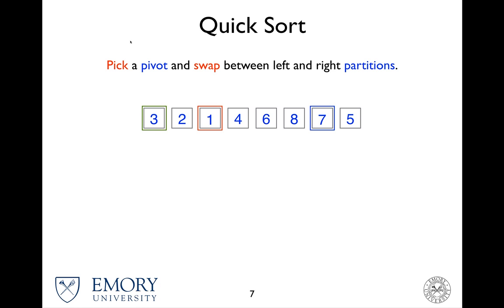You keep doing this again. The red box now tries to find something greater, and stops at four. The blue box tries to find some value that's actually smaller than three, which is the pivot, and has to go all the way to one. At this point, the two pointers have crossed each other, so instead of swapping those two, you swap between the right partition pointer and the pivot, which is one and three.